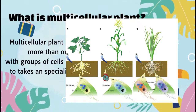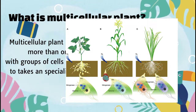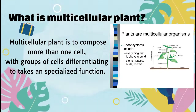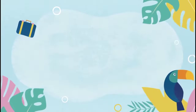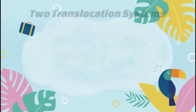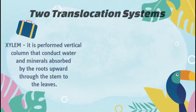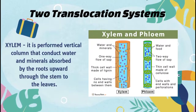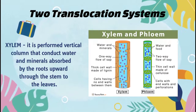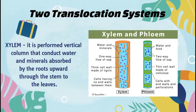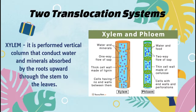Kinakailangan sa multicellular plant, yung water at organic substances ay maabsorb sa pamamagitan ng roots na matransport sa leaves. There are two translocation systems. First, the xylem. It forms a vertical column that conducts water and minerals absorbed by the roots upward through the stem to the leaves. Meaning, through the xylem, water and mineral nutrients are properly distributed to all parts of the plant.